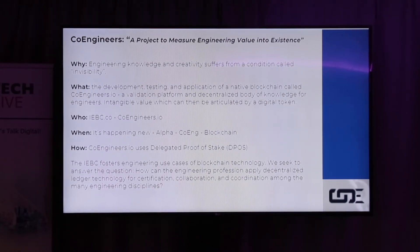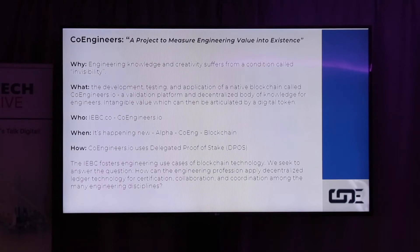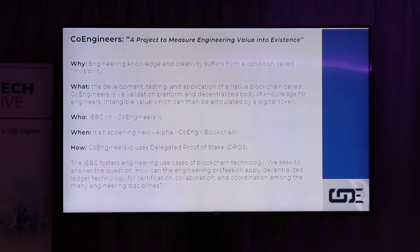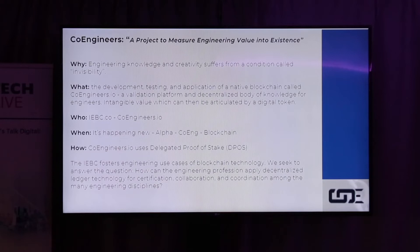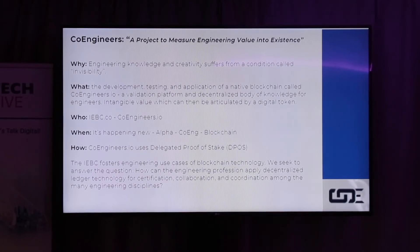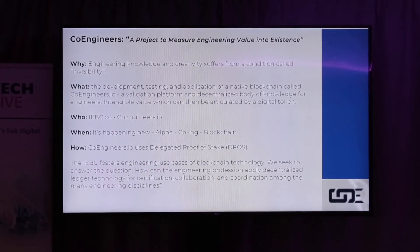Co-engineers is a project that has arisen from the IEBC, and it's a project to measure engineering value into existence. Why? Well, engineering knowledge and creativity suffers from a condition called invisibility. The value that you create is almost invisible to the people who actually go and use it. The development, testing, and application of a native blockchain called co-engineers.io is a validation platform for a decentralized body of knowledge for engineers where intangible value can be articulated by a digital token.